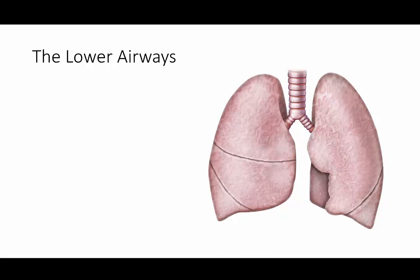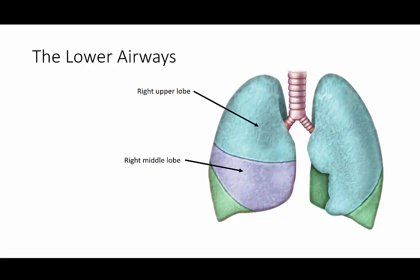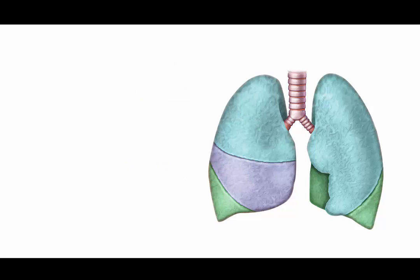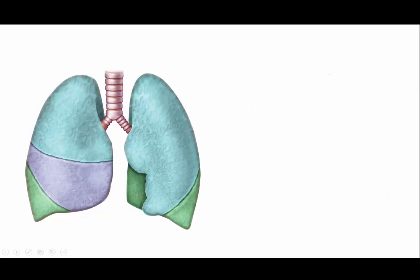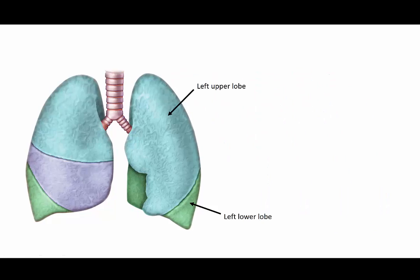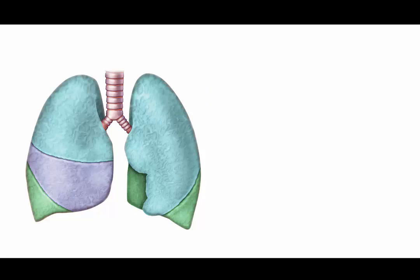Next, we move down past the trachea and into the first part of the lower airway and the lungs. The right lung has three lobes, named the upper, middle, and lower lobes. These lobes are separated by the horizontal and oblique fissures. The left lung is composed of two lobes and one oblique fissure. It also contains the lingula, which in some ways acts as a left middle lobe.